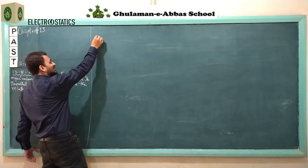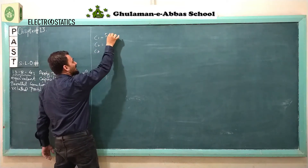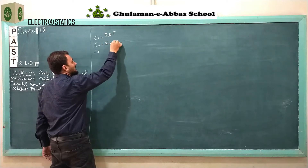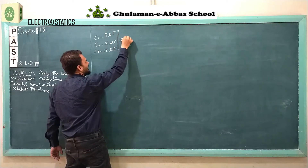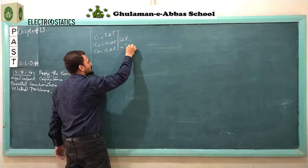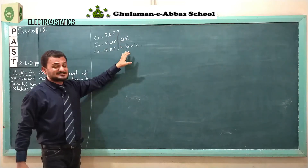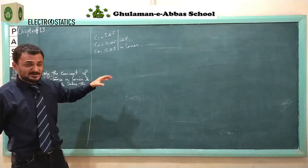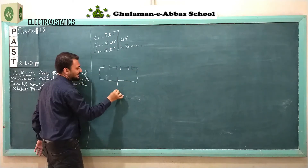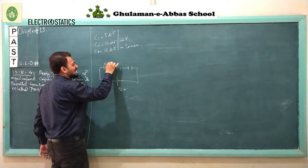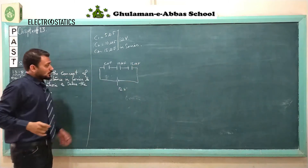Let's suppose a question to solve. We have three capacitors of values 5 microfarad, 10 microfarad, and 15 microfarad. They are all connected with a 12 volt battery in series combination. Let's draw the circuit — these are three capacitors connected with a 12 volt battery: C1 is 5 microfarad, C2 is 10 microfarad, and C3 is 15 microfarad, in series combination.